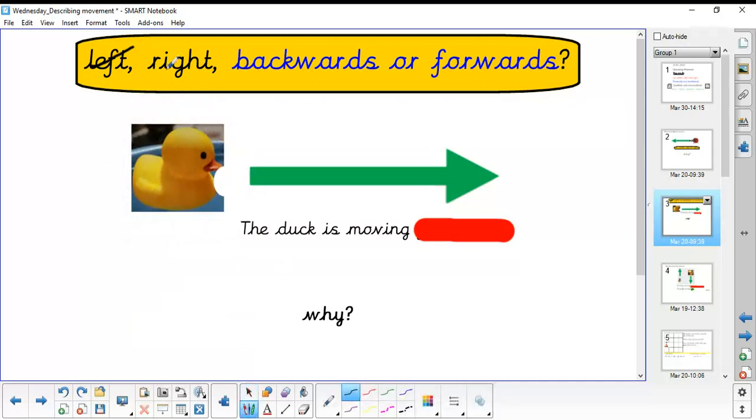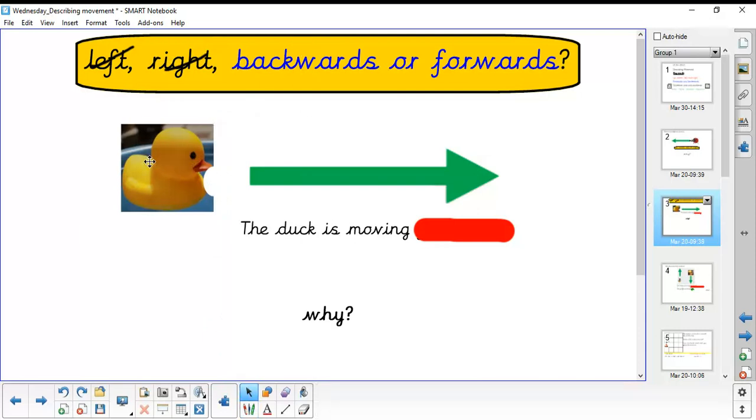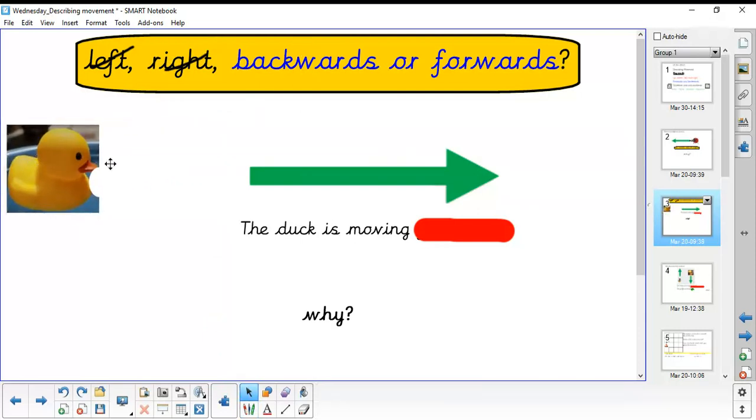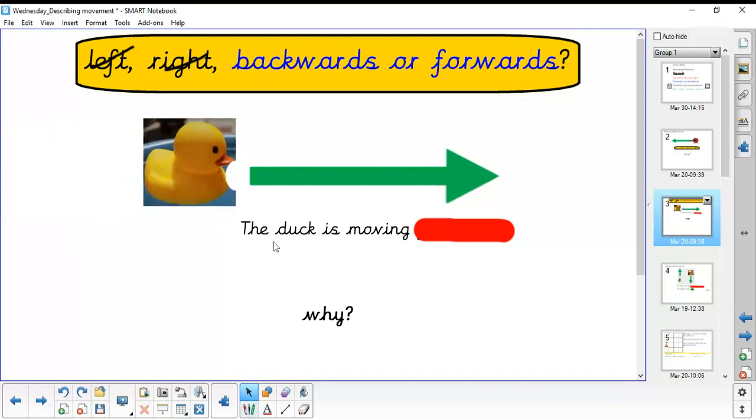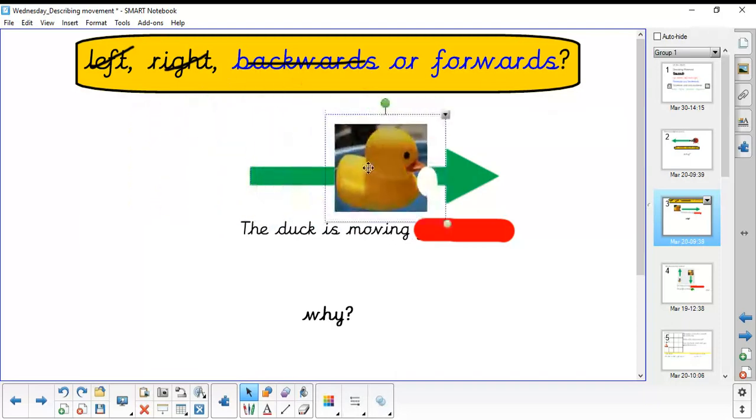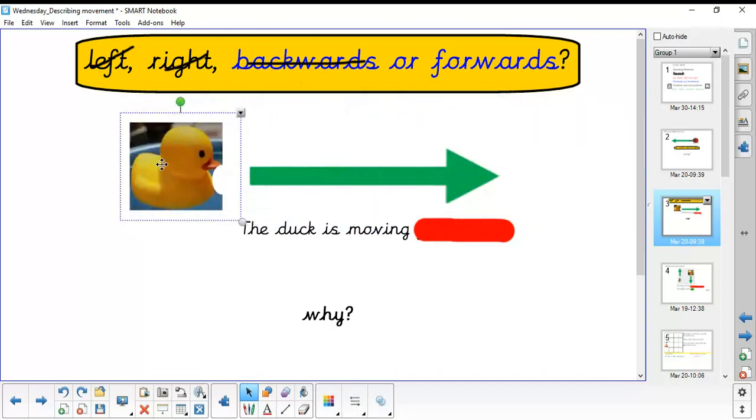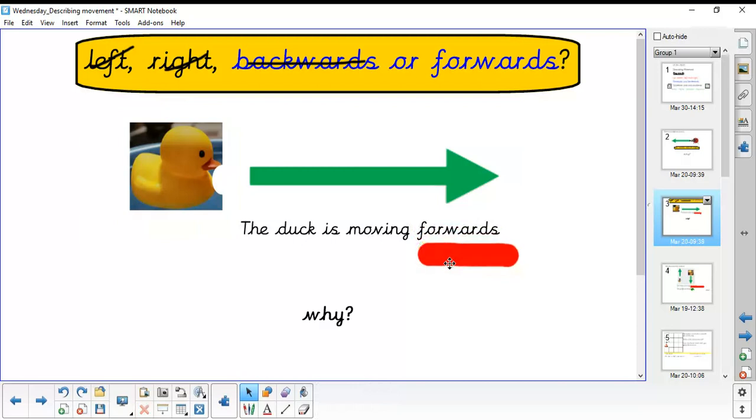If we said for the duck to move backwards, it would be this way. And if we asked the duck to move forwards, quack, quack, it would move along the green line. So the duck is moving forwards.